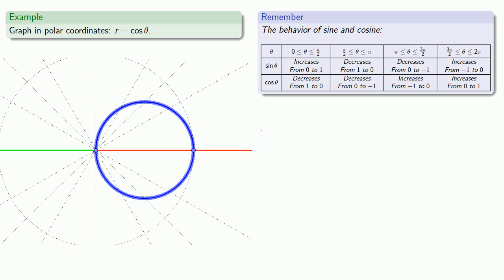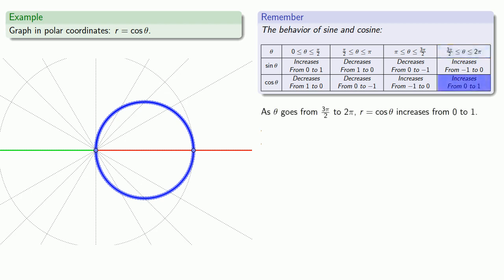Finally, as theta goes from 3 pi over 2 to 2 pi, r will increase from 0 to 1. This time we'll be going forward the same distance we went backward before, so again we'll retrace our steps. Putting this all together, we end up with the graph of a circle.